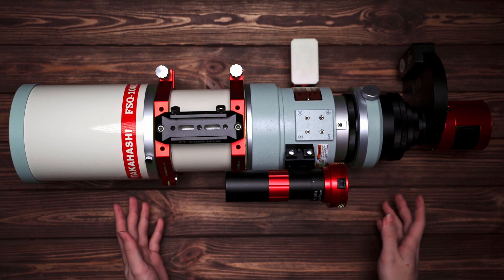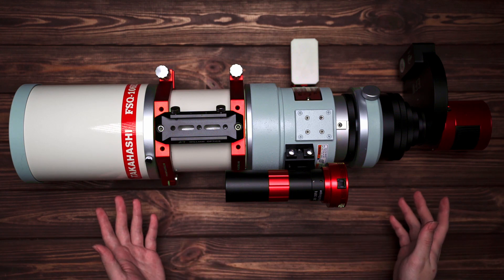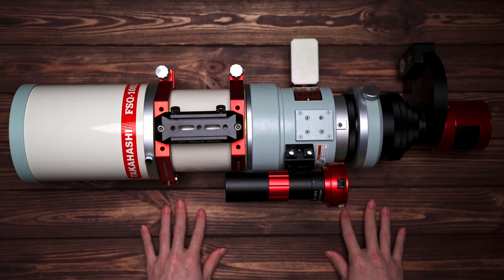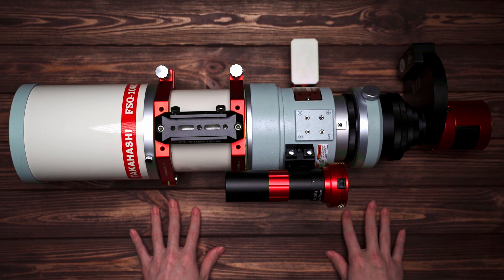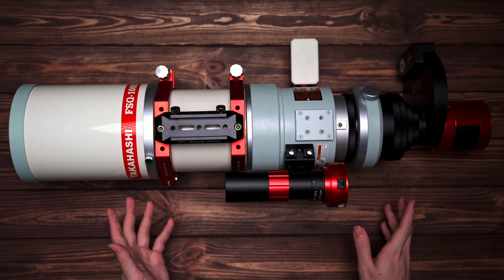The filter wheel is ZWO 8-position filter wheel for either 1.25 inches mounted or 31mm unmounted filters. The main imaging camera is ZWO ASI 1600 monochrome cooling camera.